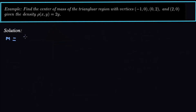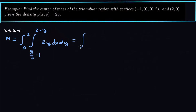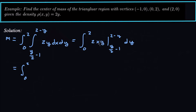The mass equals the integral from 0 to 2 in y, and from y/2 minus 1 to 2 minus y in x, of the density 2y dx dy. Integrating with respect to x gives 2xy, evaluated from y/2 minus 1 to 2 minus y, then dy. This becomes the integral from 0 to 2 of 2y times (2 minus y minus y/2 minus (negative 1)) dy, which simplifies inside the parentheses.